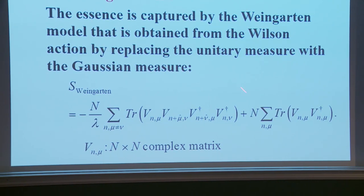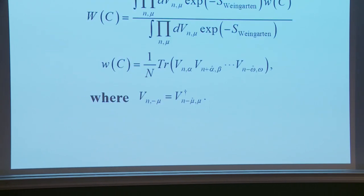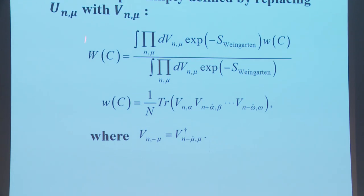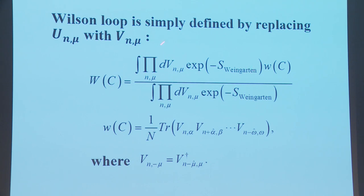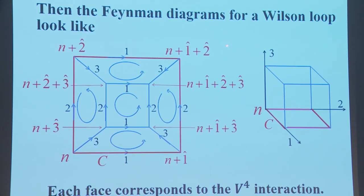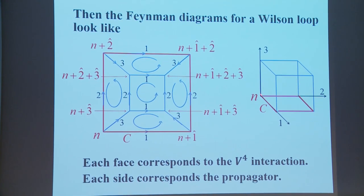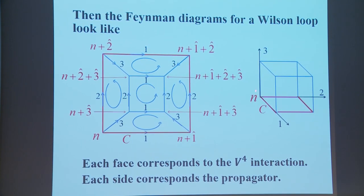This is the Weingarten model: instead of the unitary measure, we consider the Gaussian measure, where v_Nμ are N×N complex matrices. The Wilson loop for the Weingarten model is defined by replacing u_Nμ with v_Nμ. The Feynman diagrams for the Wilson loop then arise from perturbative expansion — for example, a fifth-order perturbation in λ corresponds to a diagram with five plaquettes.